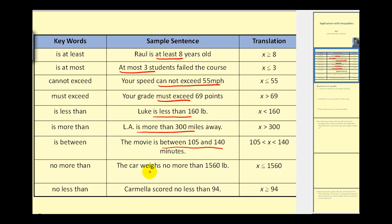A car weighs no more than 1,560 pounds, so x is less than or equal to 1,560. And lastly, Carmela scored no less than 94 points, meaning x is greater than or equal to 94.